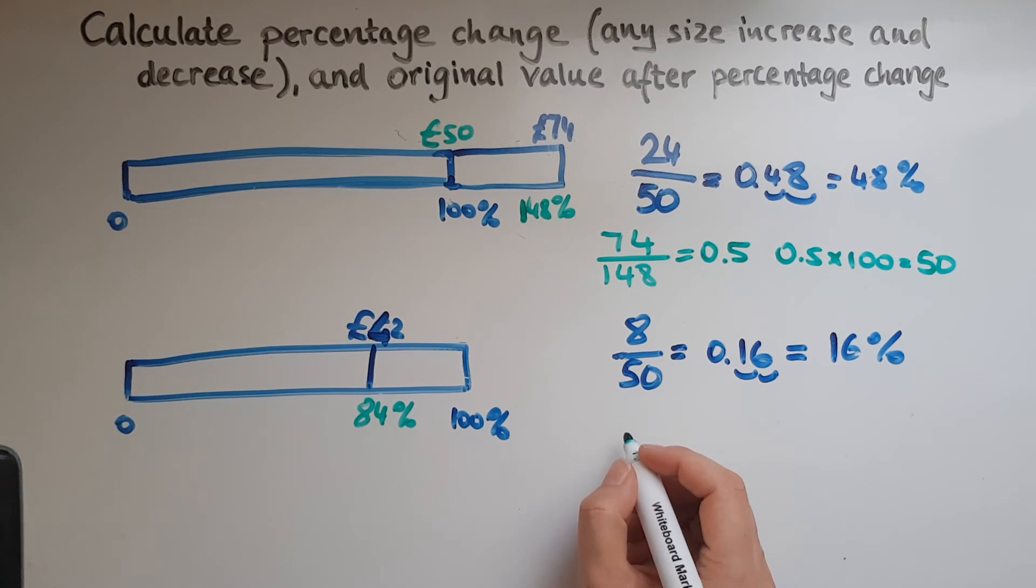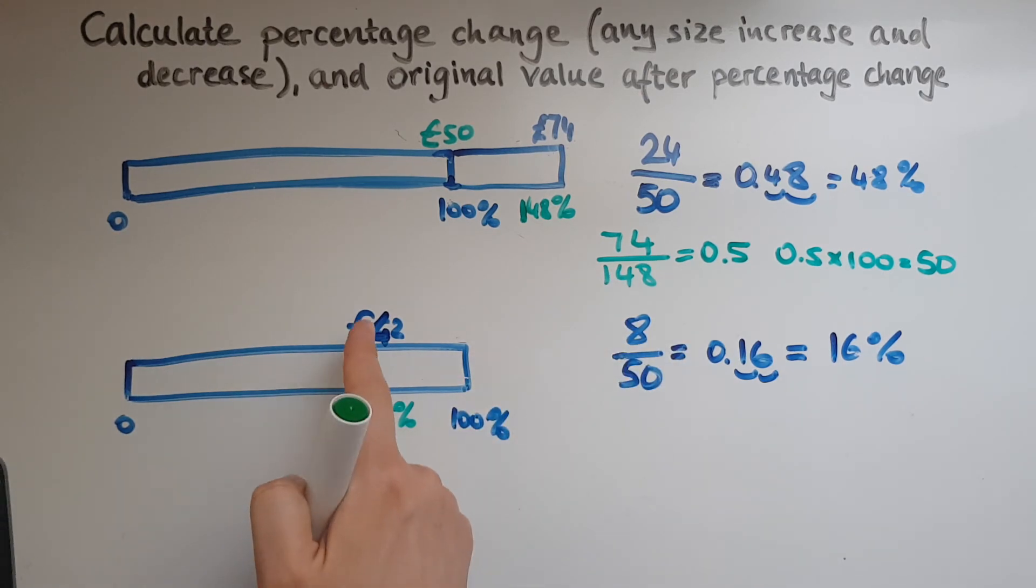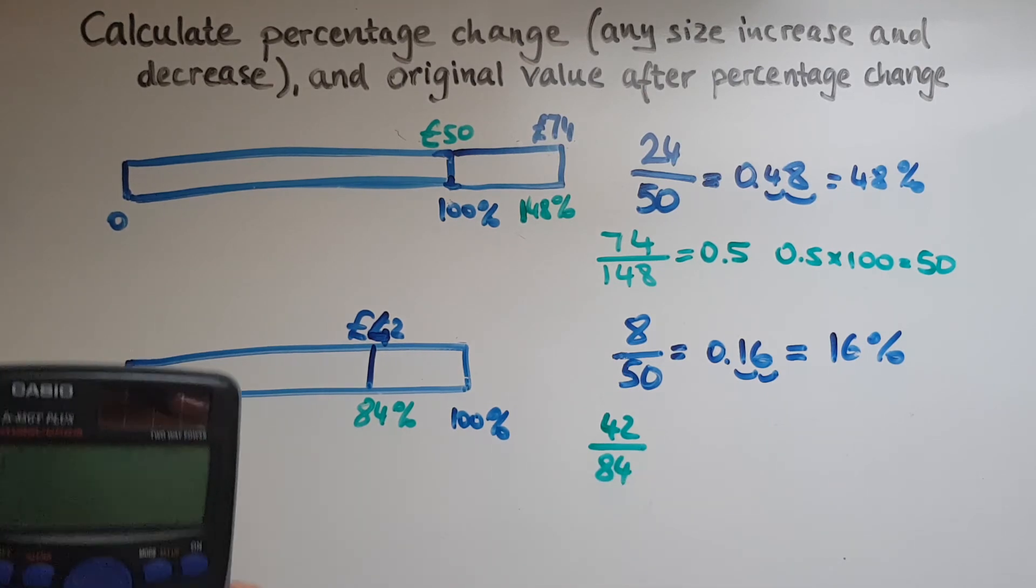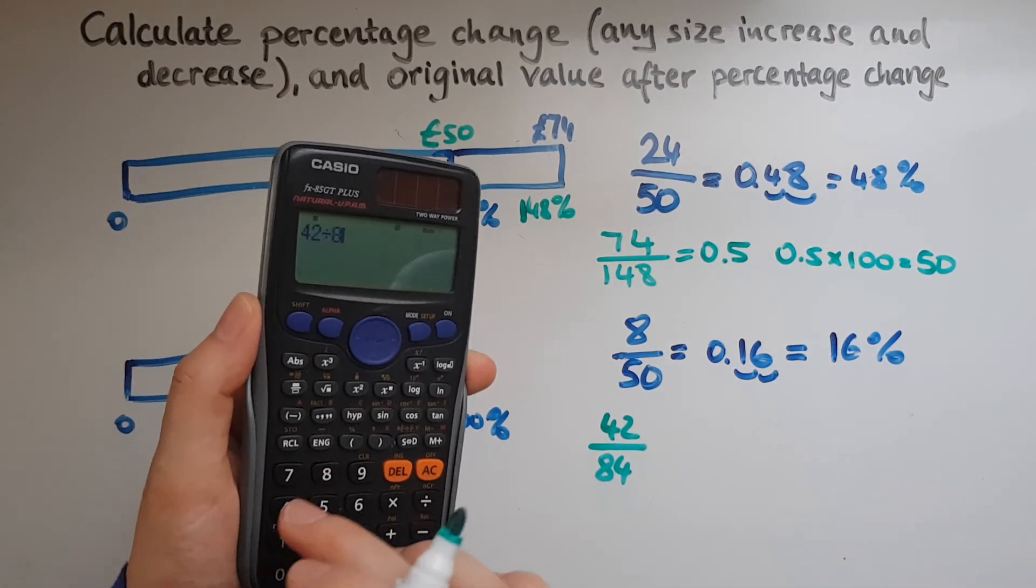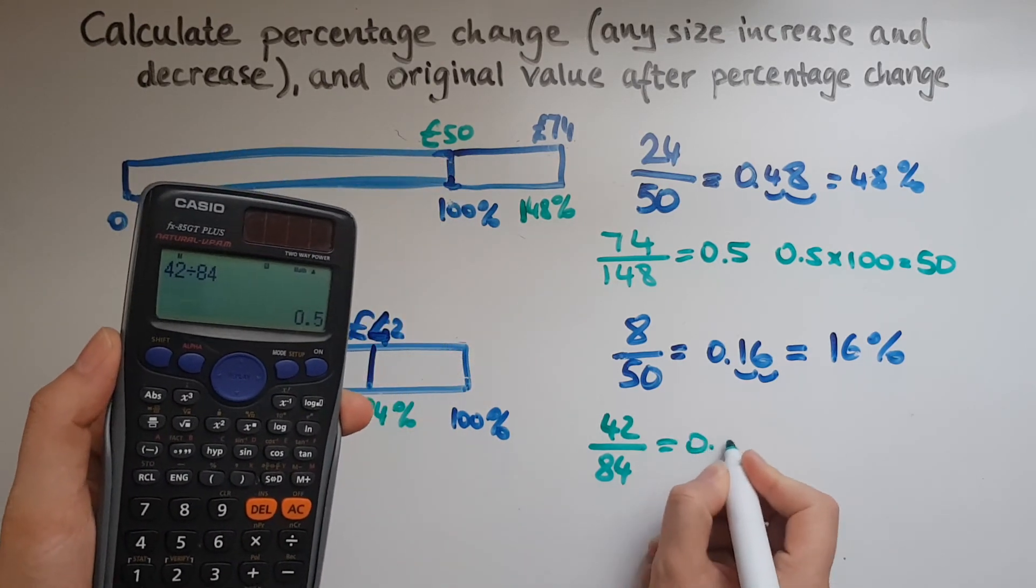So what I will do is exactly the same thing that I did there. 42 pounds is 84%. So in order to get 1%, I'll divide this by 84. So that's going to give me one small slice 1%. So 42 divided by 84, that gives me 0.5.